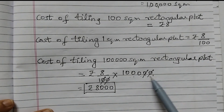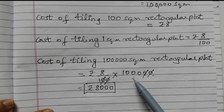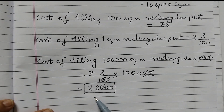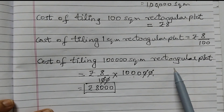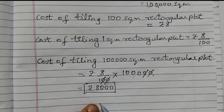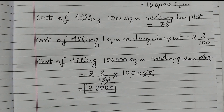The cost of tiling 1 lakh square meter rectangular plot is rupees 8000. I hope you find this video helpful. Thank you.